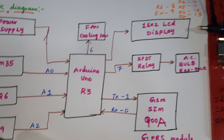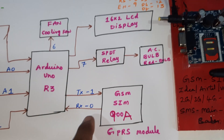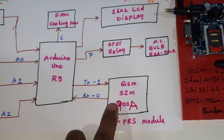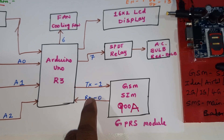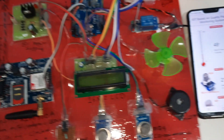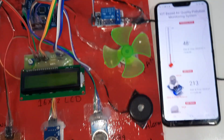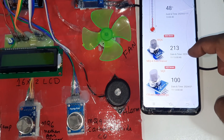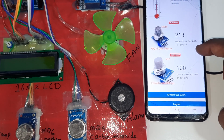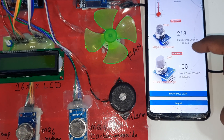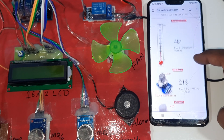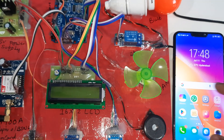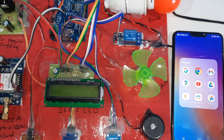If the gas sensor detects gas, the bulb should turn on. We also have a GSM SIM900A GPRS module connected on RX/TX pins 0 and 1. On the web page, the LM35 temperature sensor, MQ6 gas sensor, and MQ9 carbon monoxide sensor values will all be displayed.